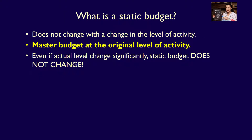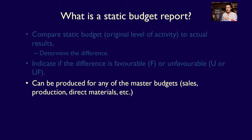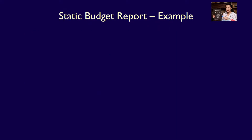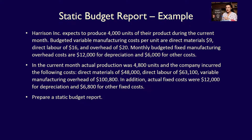Basically, favorable means it's good for the organization and unfavorable means it's bad for the organization. Remember, the static budget is the master budget at the original level of activity. Any of the budgets in the master budget, such as the sales budget, can be used as a basis for a static budget report. Let's use an example to demonstrate a static budget report.